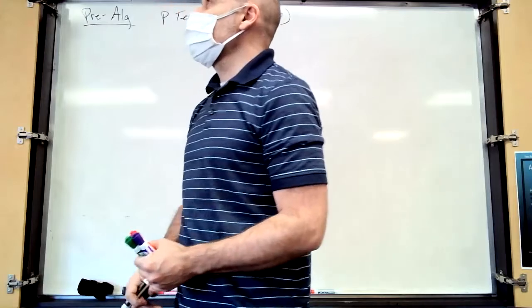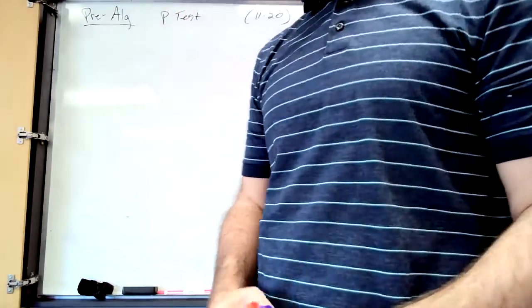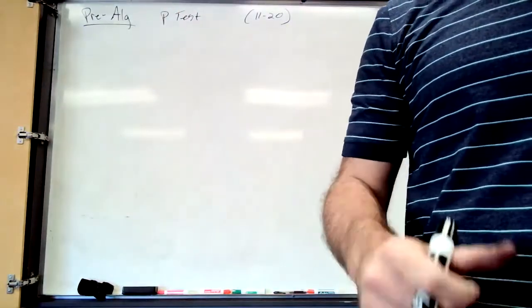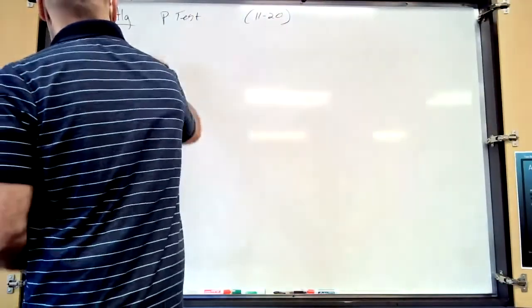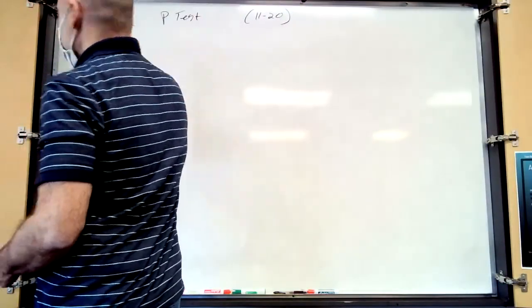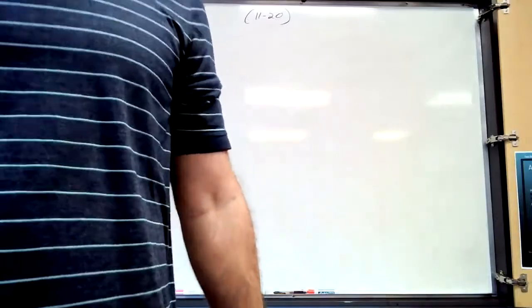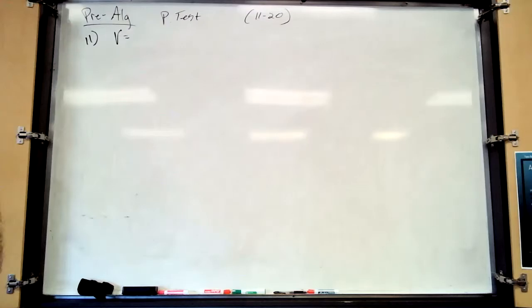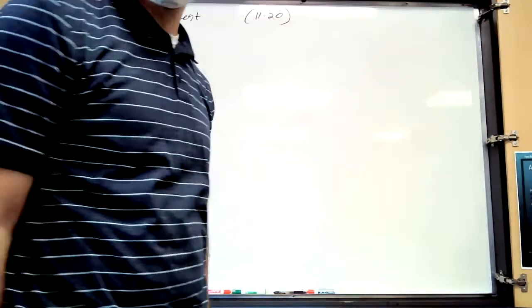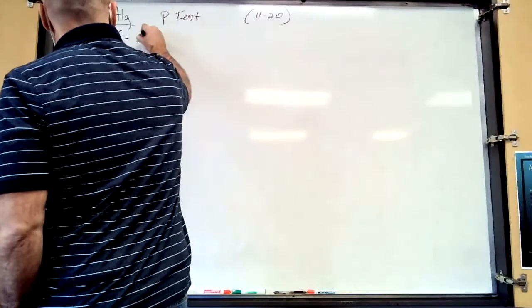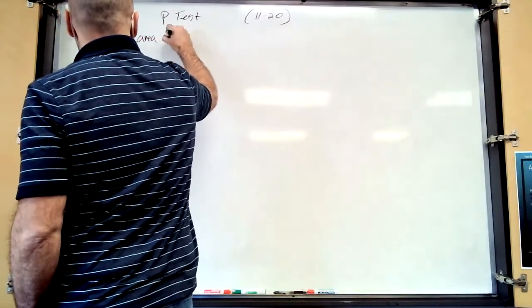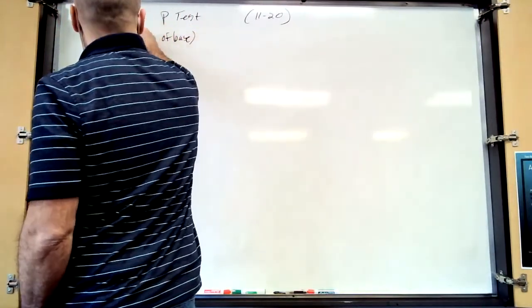The two-dimensional drawing shows the base. The prism is 11 meters tall. Find the volume. How do you find the volume of a prism? Volume equals area of the base times height. Good job — so let's find the area of the base. It's not too difficult, but we do have to break this shape up into two different shapes.